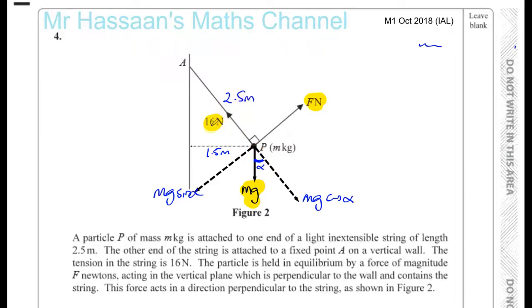16 equals mg cosine alpha, and on this direction, it will be F equals mg sine alpha. But I need to find what this angle alpha is.